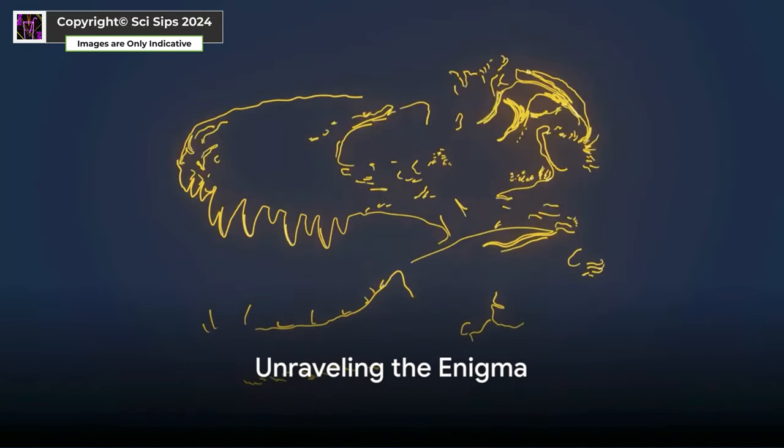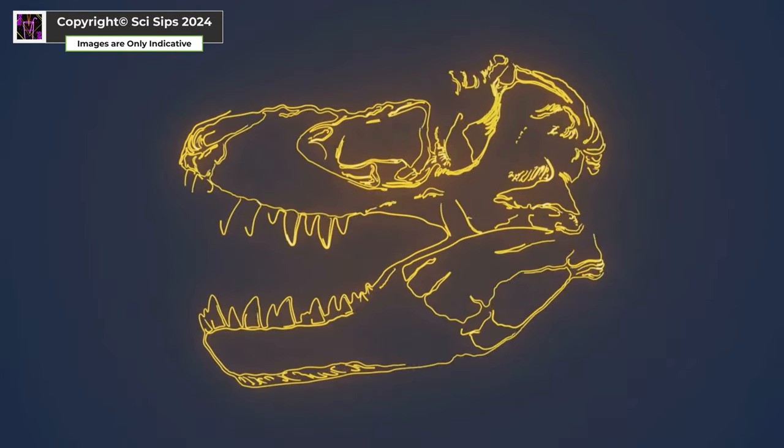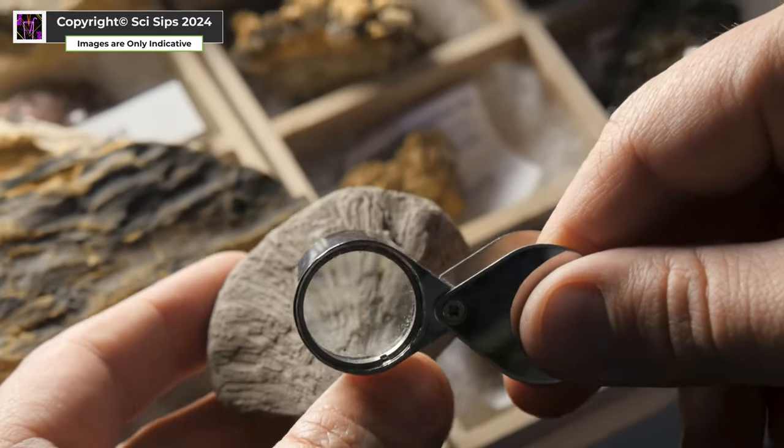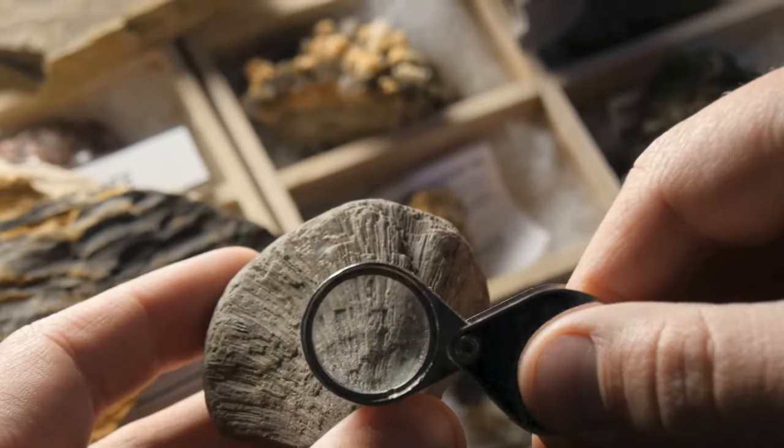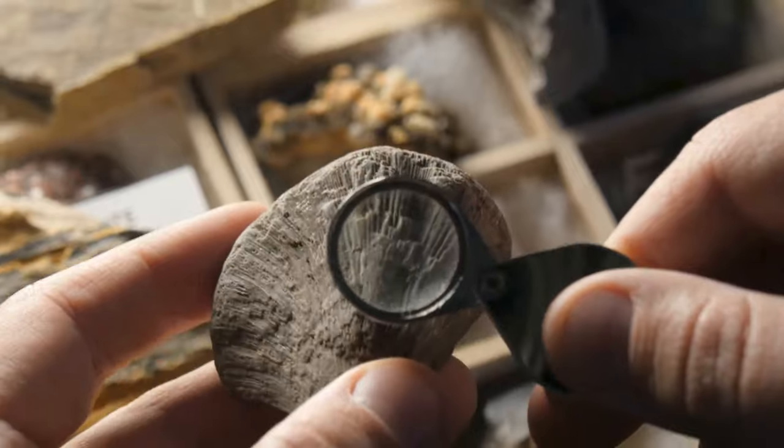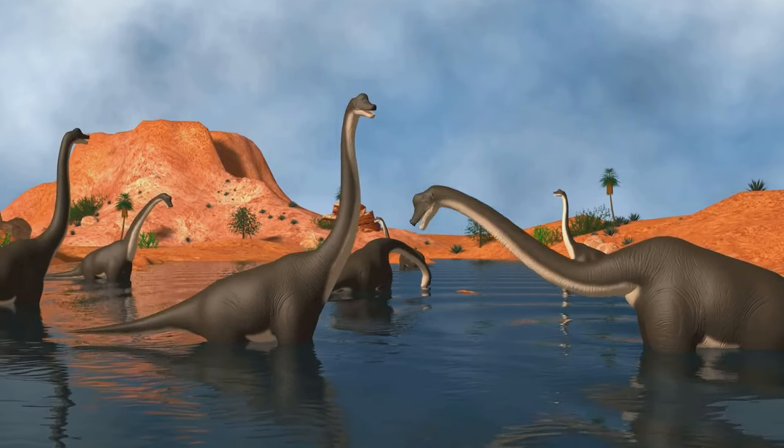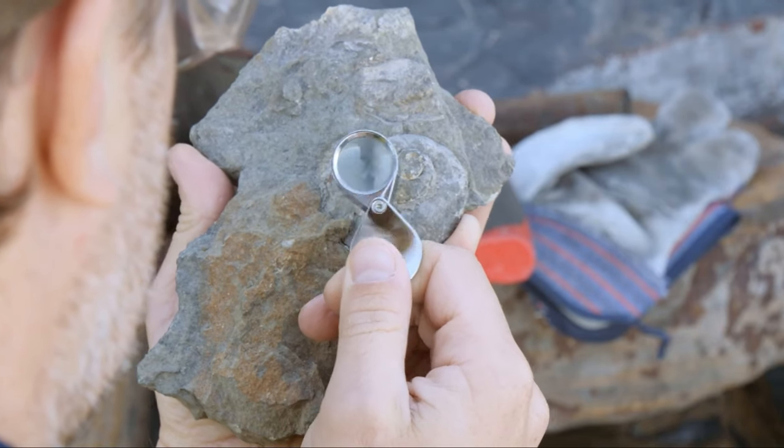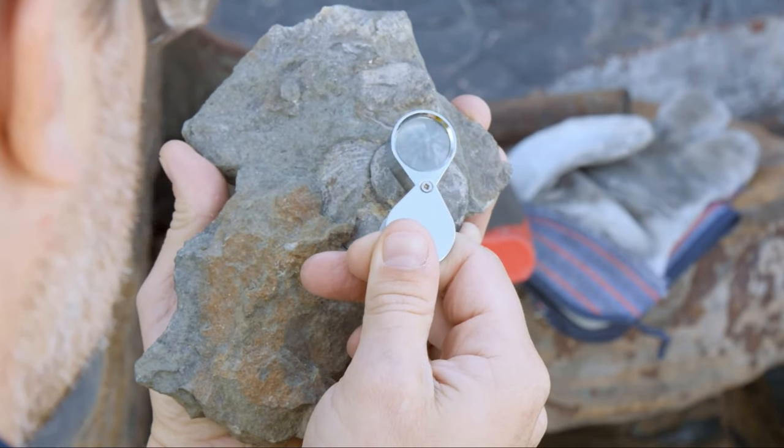Picture a giant beast with a massive skull resembling a lion and a body resembling a gigantic lizard. Meet the Dinocephalosaurus orientalis, an extinct creature that continues to baffle paleontologists. We'll delve into its unique anatomy, explore theories about its diet and behavior, and uncover the ongoing research that sheds light on this fascinating prehistoric puzzle.